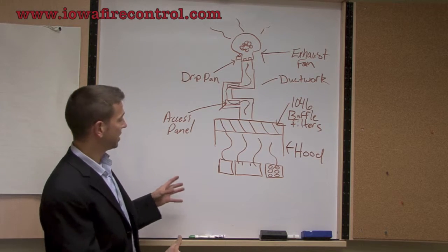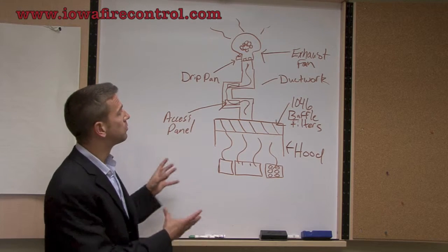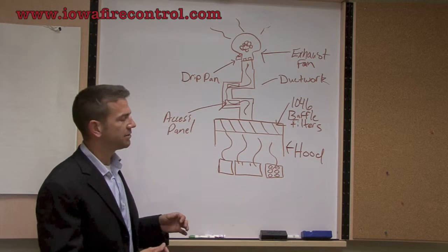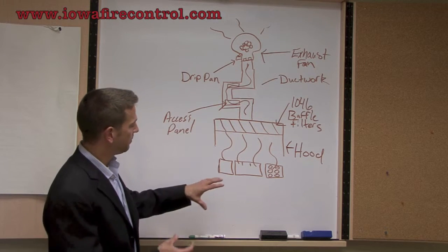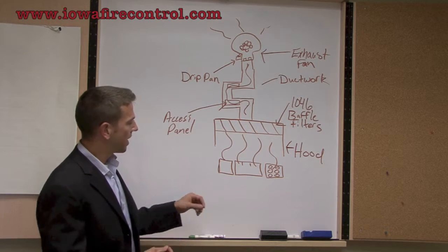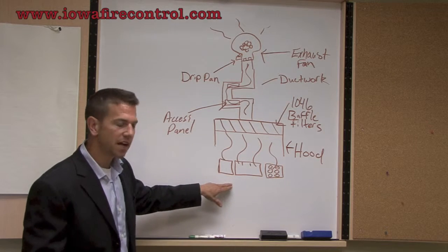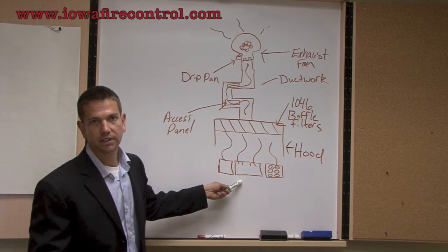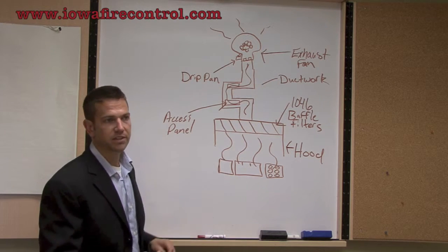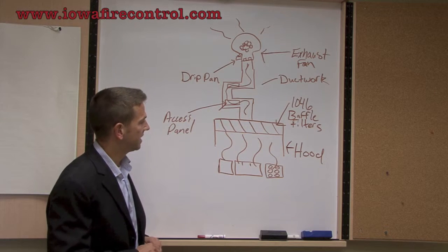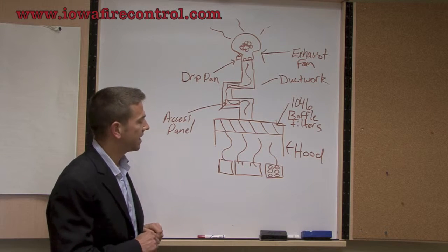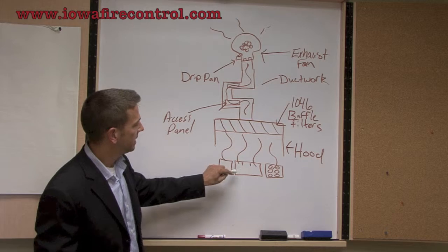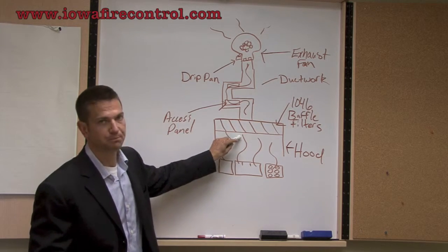Basically, I want to start by showing you a broad overview of what happens. You'll have to forgive me for the crude drawing, but down below we have the appliances. Those appliances create effluent — you use different styles of grease in cooking, animal fat — and that effluent comes up into your hood system.